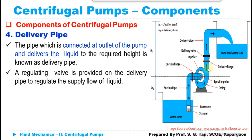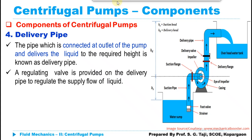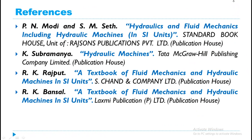The delivery pipe is connected to the outlet of the casing and delivers water to the desired delivery point. It comes with a delivery valve that allows control of the outlet discharge and can also be used for priming — a concept we will discuss in the next lecture. Water coming out from the casing with maximum pressure energy moves through the delivery pipe to the desired location. Those are the important components of the centrifugal pump. Thank you for watching.